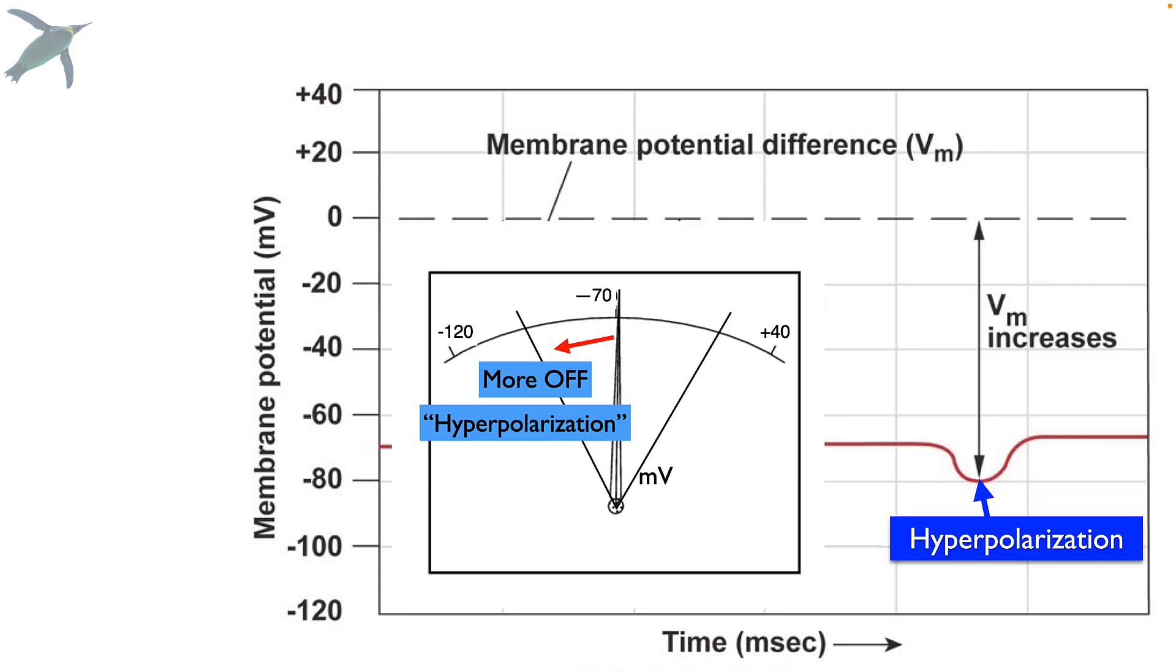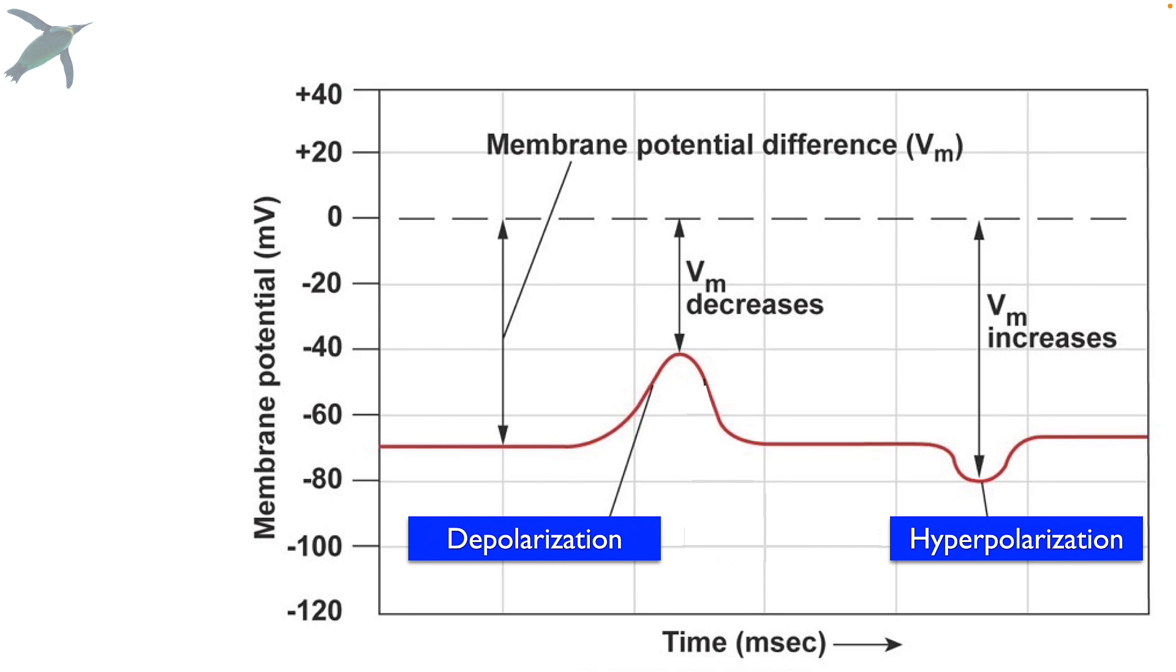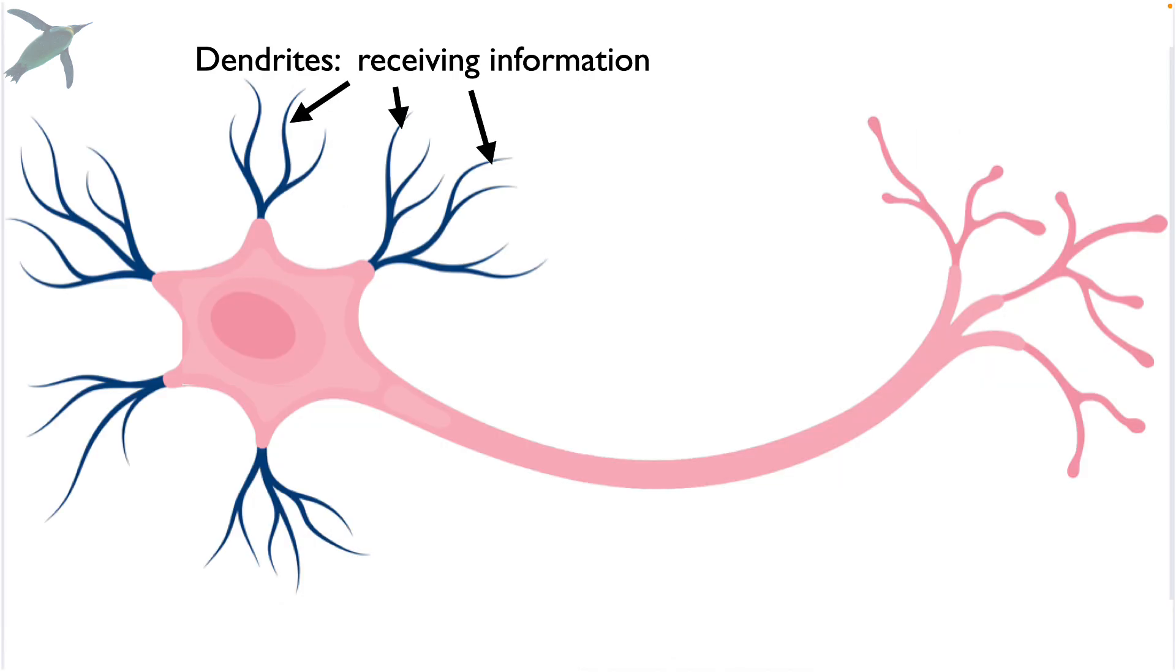The alternative is that we go from rest and we go down on this graph. We are hyperpolarizing, making the inside even more negative than it is at rest. And this is code for more off. So, again, those are the only two directions you can go. And that's what's happening with the receiving of information at the dendrites.